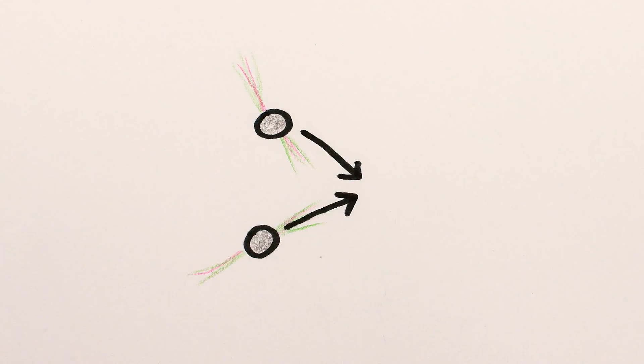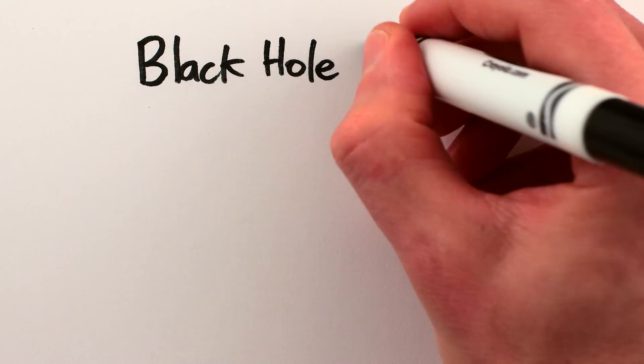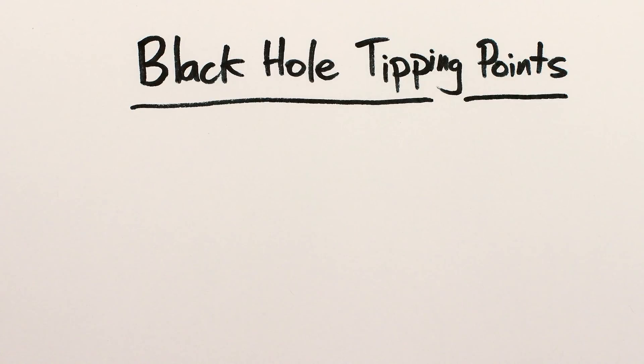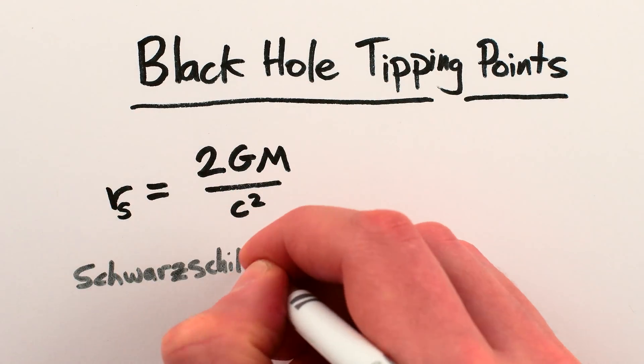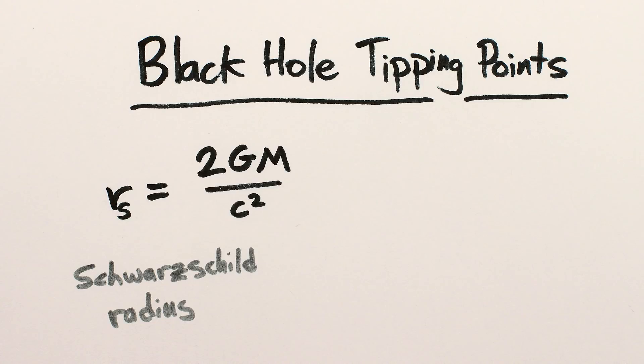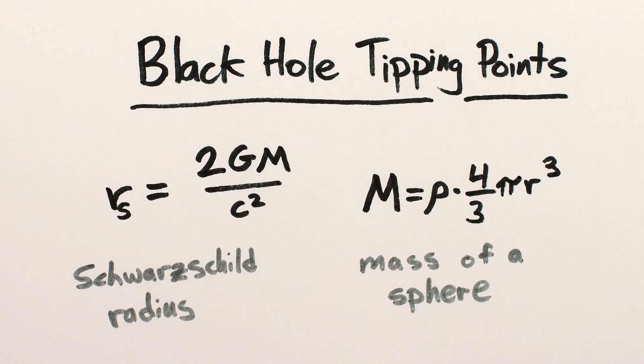For example, if two neutron stars merge, they might form a black hole. You can do a very rough calculation of these tipping points yourself, knowing just two things: the equation for what's called the Schwarzschild radius of a black hole, and the equation for the mass of a spherical object.